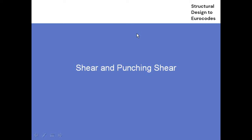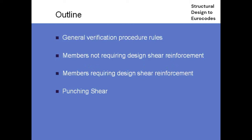We'll look at flexural shear and punching shear. What we'll cover is, first of all, some general requirements for shear. Then, on the flexural side, we'll look at members not requiring design shear reinforcement. Then we'll look at the rules for when you have shear reinforcement - things are actually really different in Eurocodes compared to previous BS practice. Then we'll finish up with a quick look at punching shear. There are also plenty of examples of flexural shear available in the book or on the Bridges site.